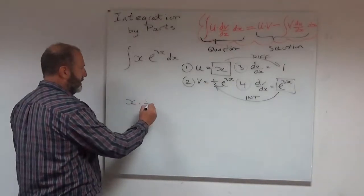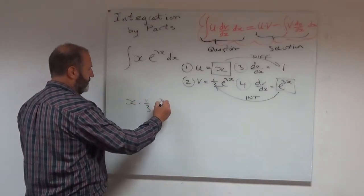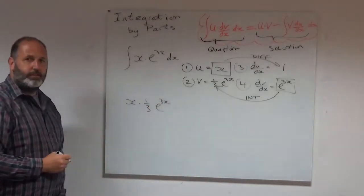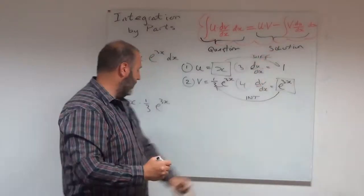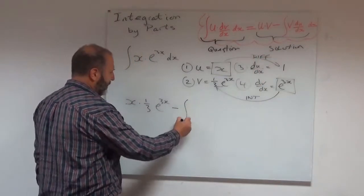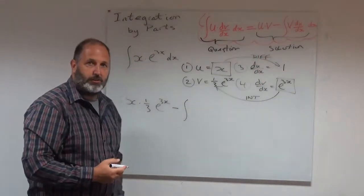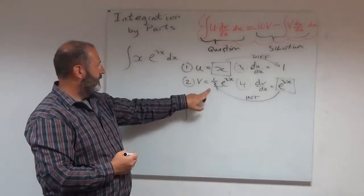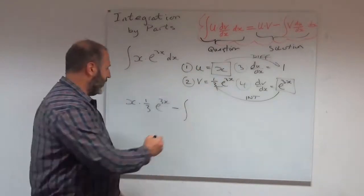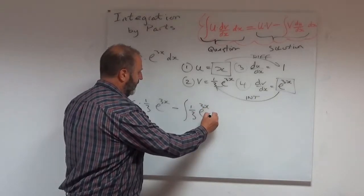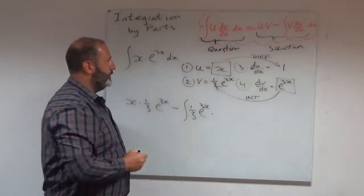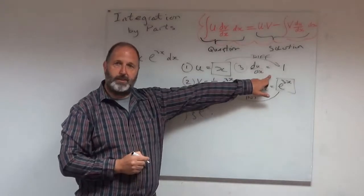x times 1 over 3 e to the 3x. And then back to my formula, minus some integral. So let me do the minus sign. Let me put the integral in. The integral of what? Well, it's v, which is this third e to the 3x. Times du dx. du dx is 1.